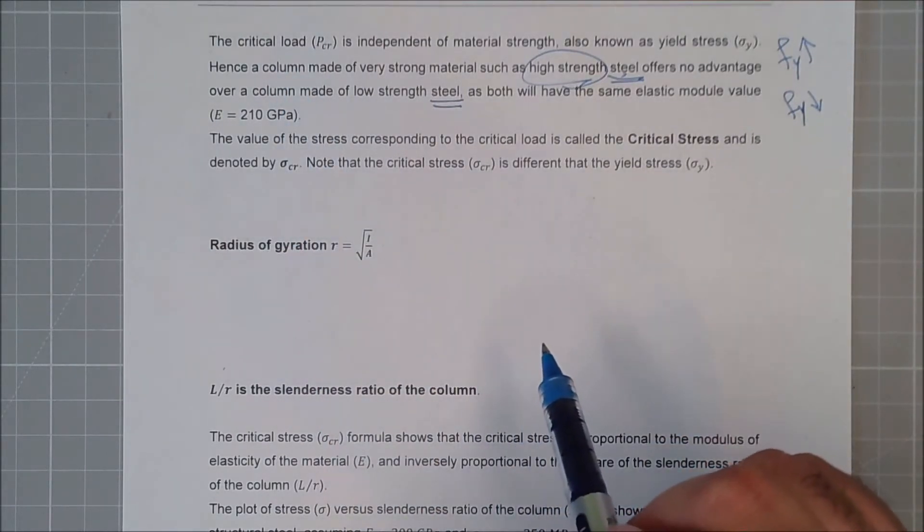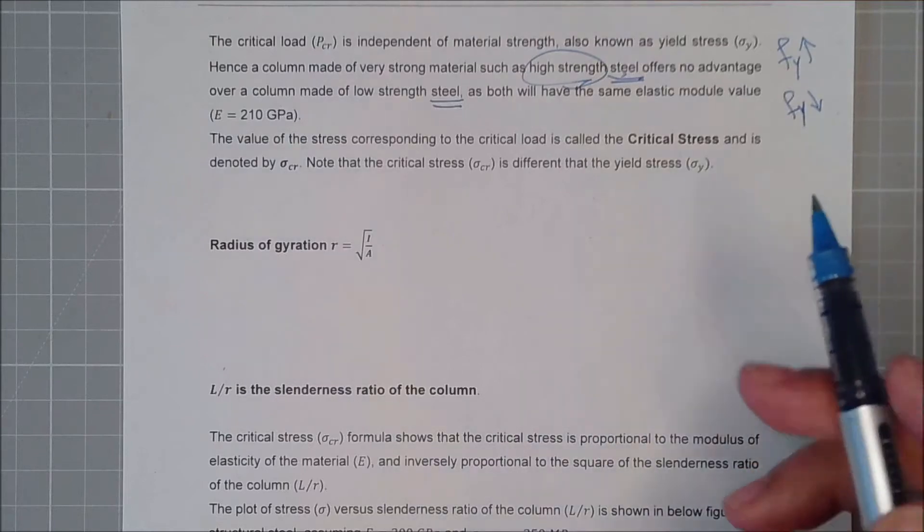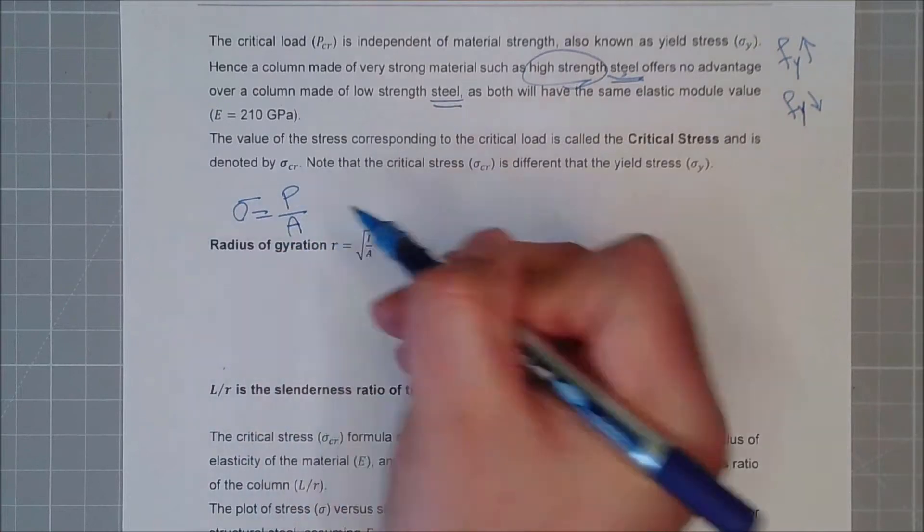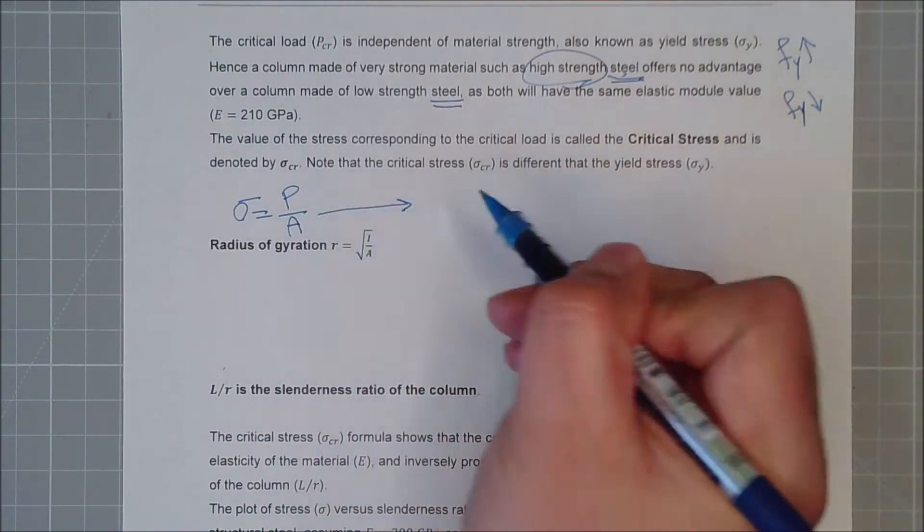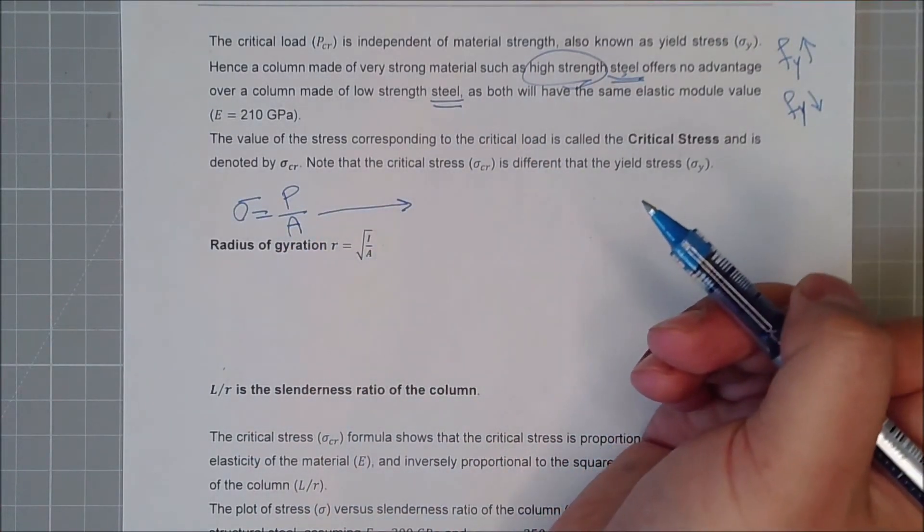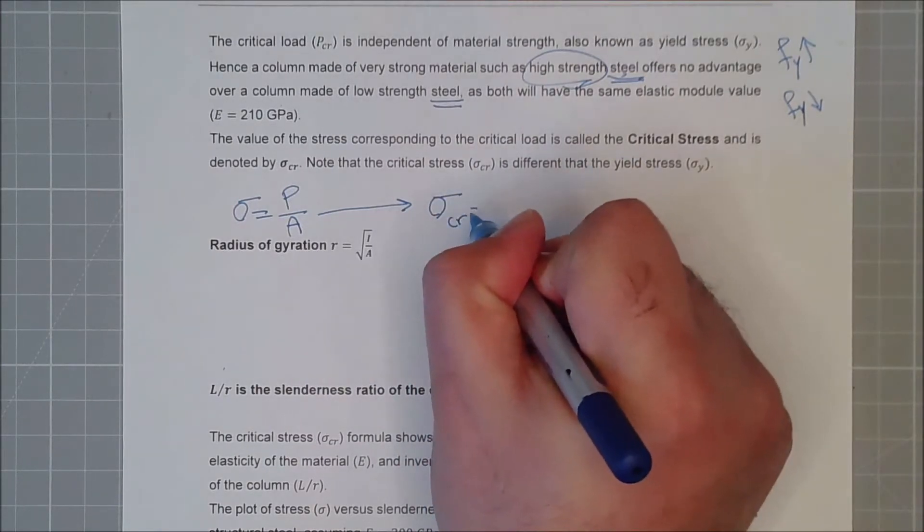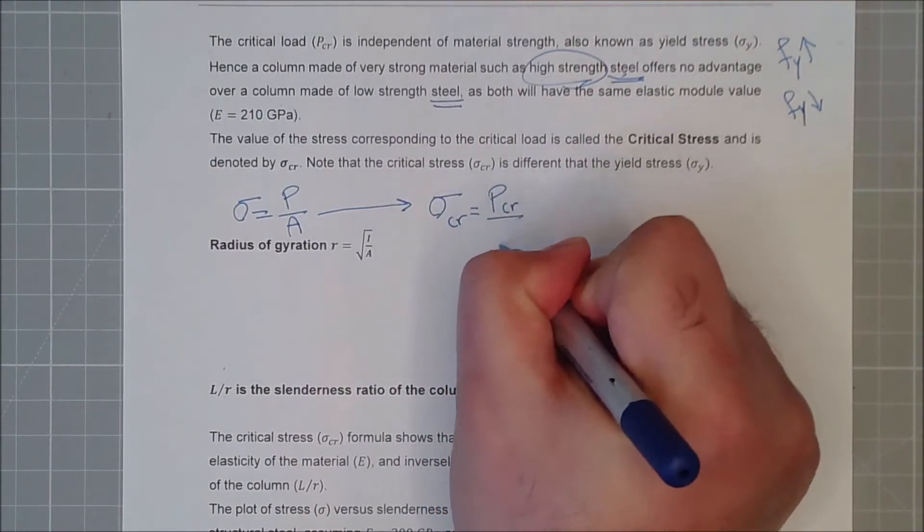Now on the other side, because we have force, if you remember, stress was let's say force over area. So knowing this formula, I can calculate the critical stress due to the buckling as well, which will be pCr over area.